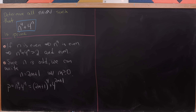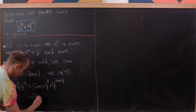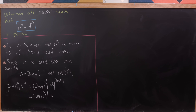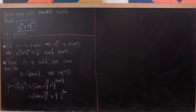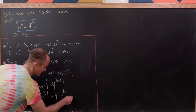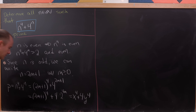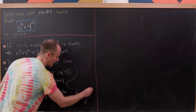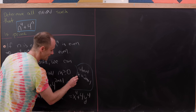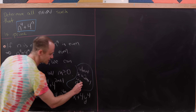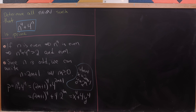Here's the key trick: we write this as (2m+1) to the fourth, and we rewrite 4 to the (2m+1) as 4 times 2 to the 4m. That's because 2 to the 4m is the same thing as 4 to the 2m — a nice happenstance that helps us work with this problem. Now we rewrite this as x to the fourth plus 4y to the fourth, where x equals 2m+1 and y equals 2 to the m, since 2 to the 4m equals (2 to the m) to the fourth.